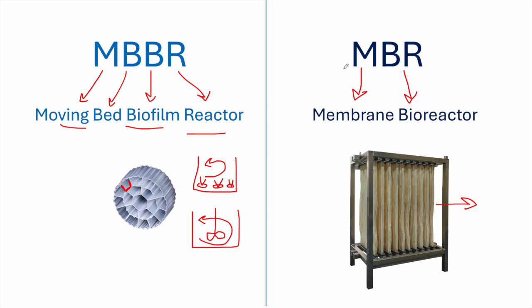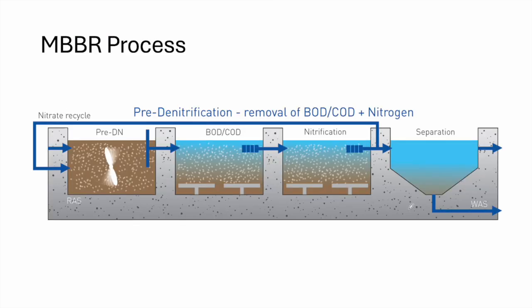In summary, both MBBR and MBR are secondary treatment processes, so the wastewater must undergo extensive primary treatment before reaching either process. They are totally different: one uses biofilm carriers — plastic carriers placed in tanks — while MBR uses an advanced membrane filtration system. I have already posted a detailed YouTube video about the MBR process and design calculations.